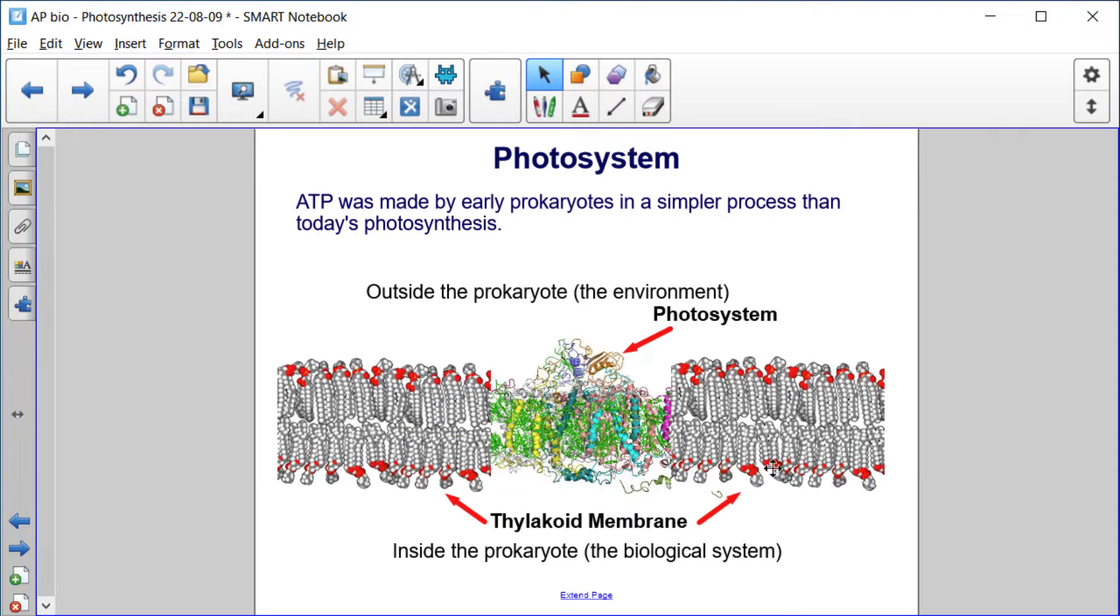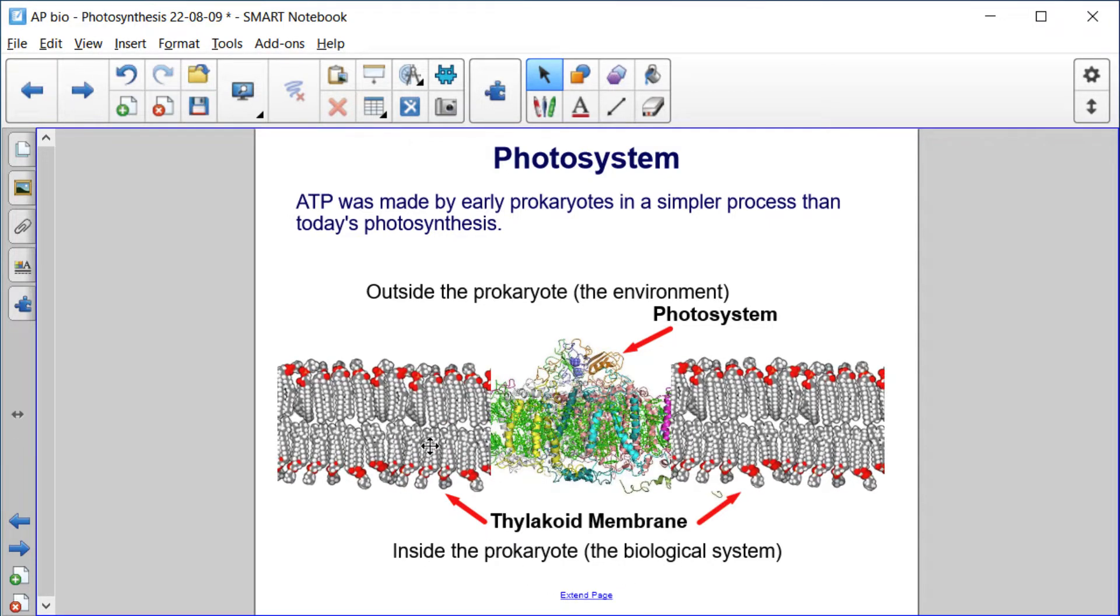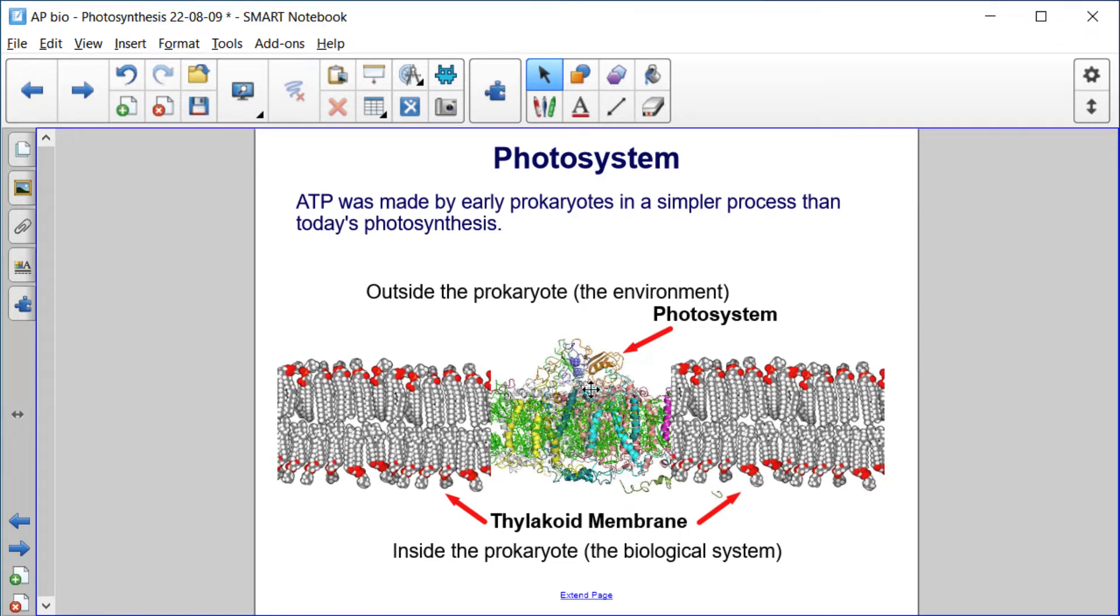For our prokaryote, we have the outside of the prokaryote or the environment, and inside the prokaryote, the biological system. We have our thylakoid membrane, and in that thylakoid membrane, we have something known as a photosystem.